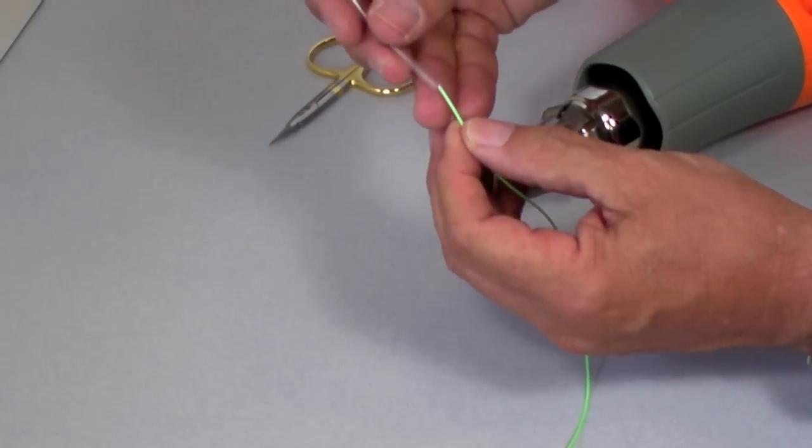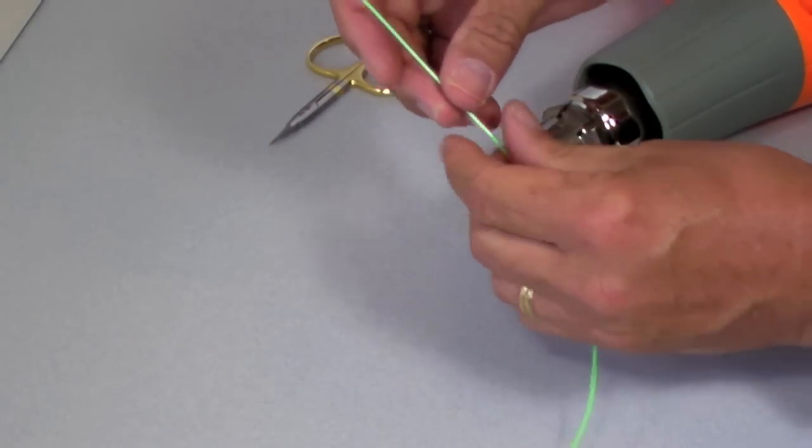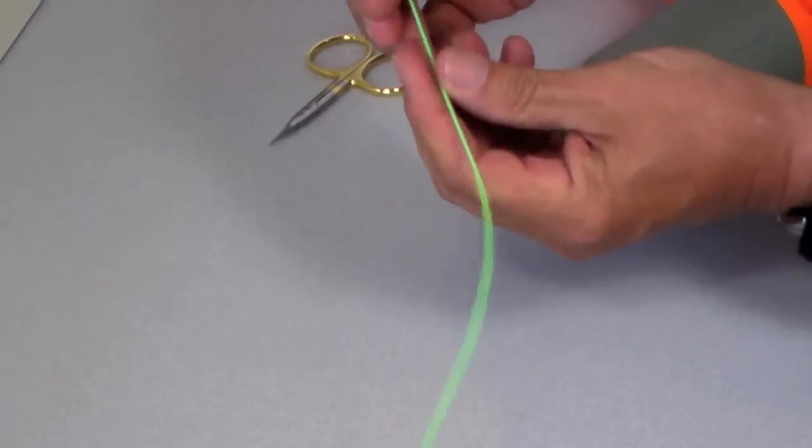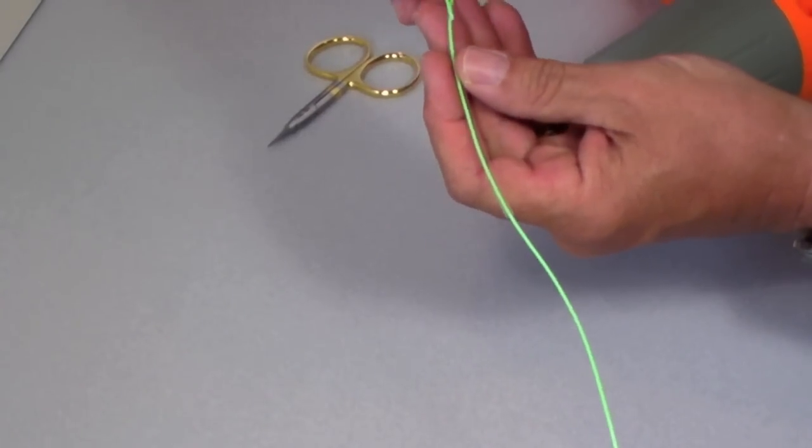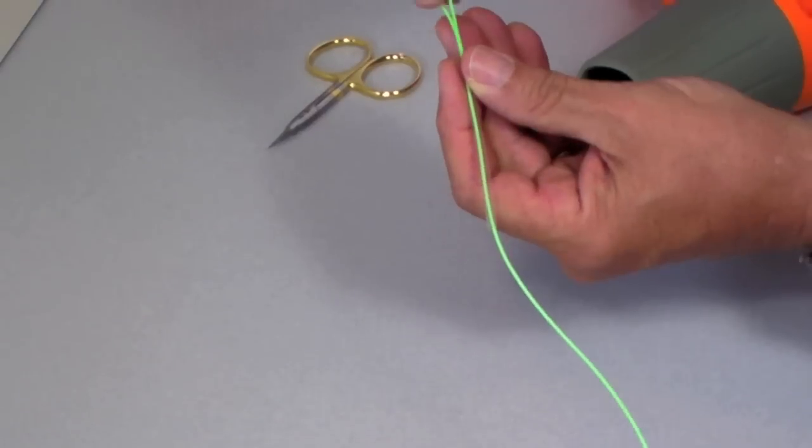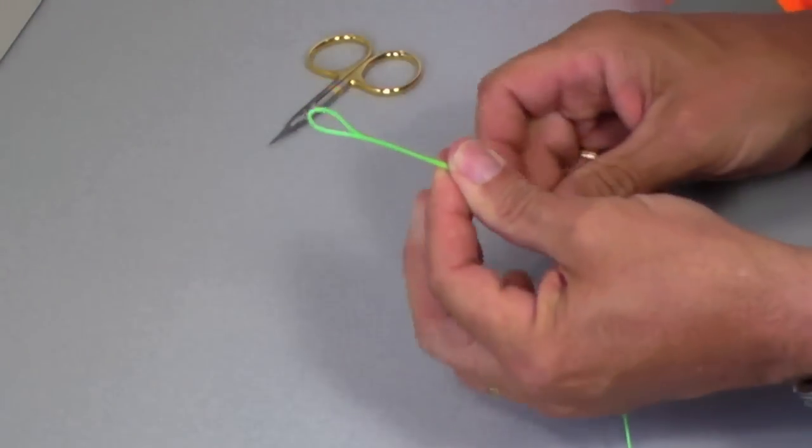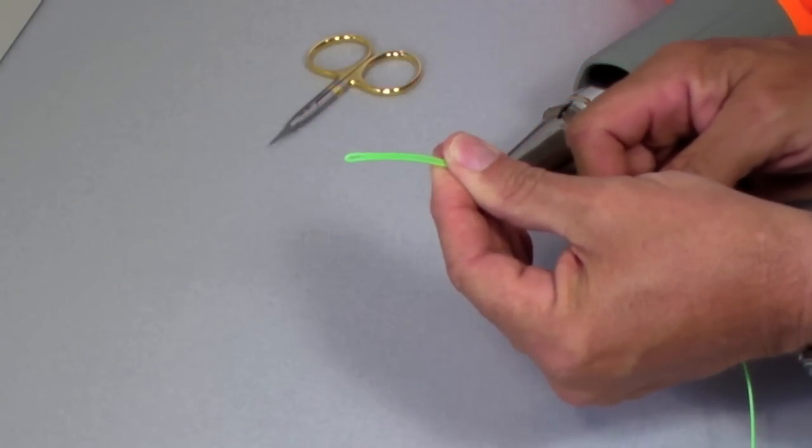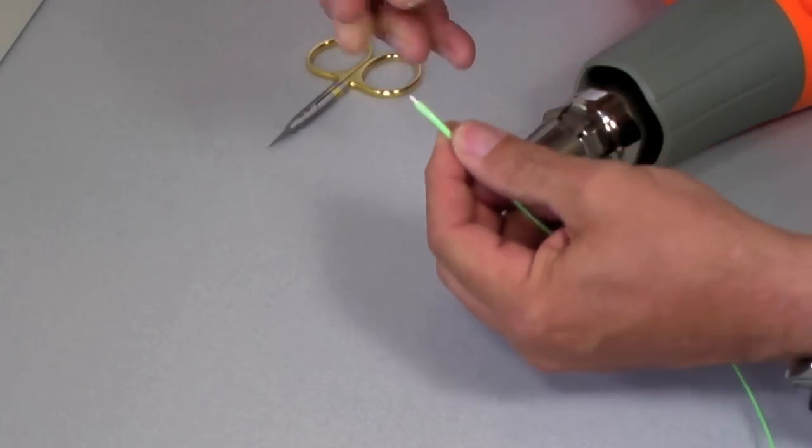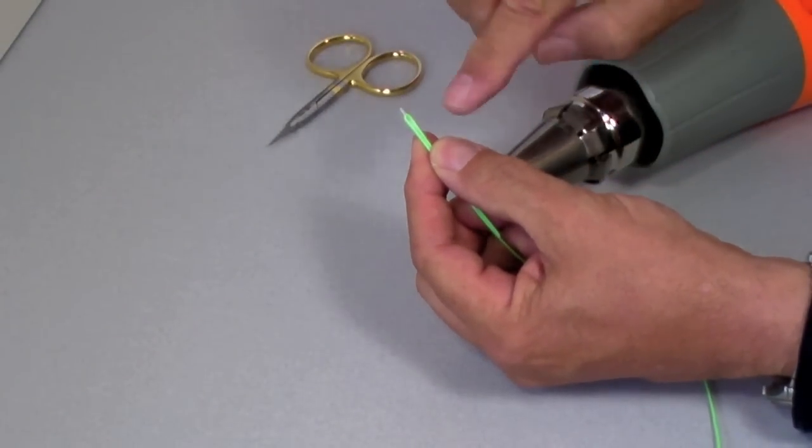All right, to begin our loop we slide it into the heat shrink and then we push it back in in this fashion. We get about three nozzle widths through and then we just pull on the main line and pull the loop into the end of the heat shrink.